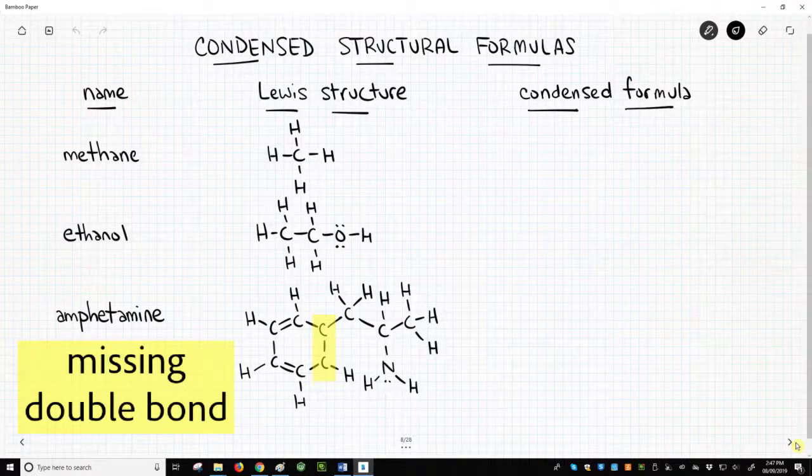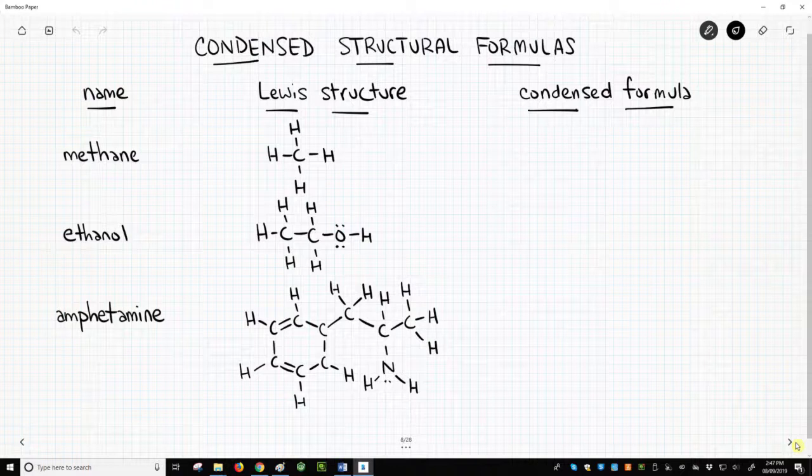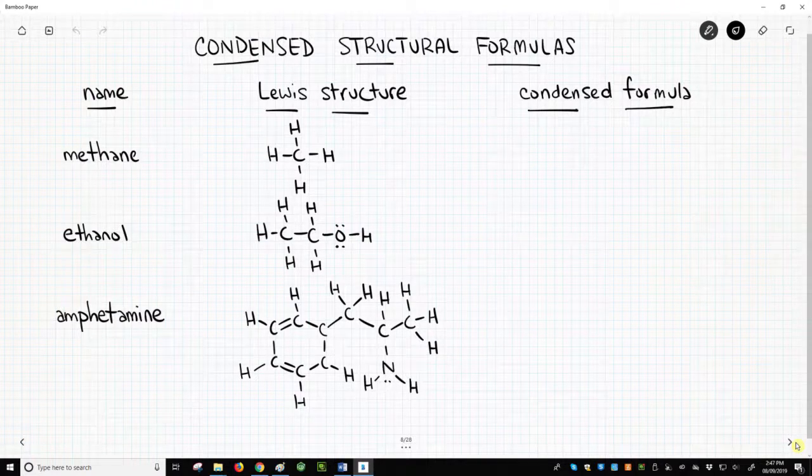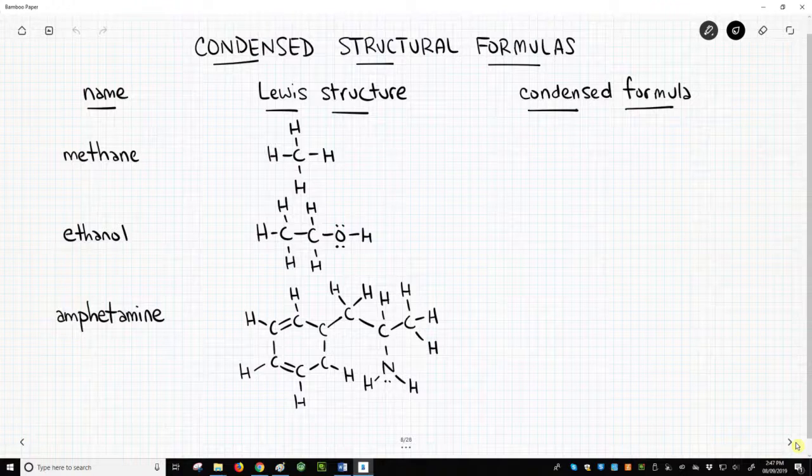Here are our three molecules from our previous video, methane, ethanol, and amphetamine with their Lewis structures. In condensed structural formulas, we write out a non-hydrogen atom, indicate the number of attached hydrogens, and then move to the next non-hydrogen atom.